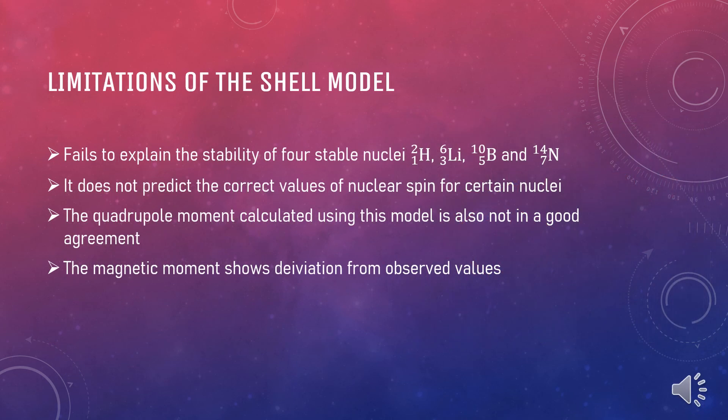The shell model also comes with some limitations like it fails to explain the stability of four stable nuclei like hydrogen, lithium, boron, and nitrogen. Secondly, it doesn't predict the correct values of the nuclear spin for certain nuclei. Thirdly, the quadrupole moment calculated using this model is also not in good agreement and the magnetic moment shows deviation from the observed values.